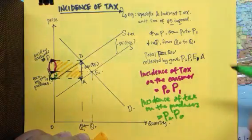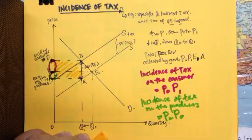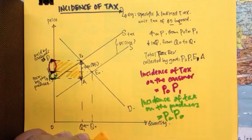So therefore, this is how you derive the incidence of tax on the producer and the consumer. Thank you.